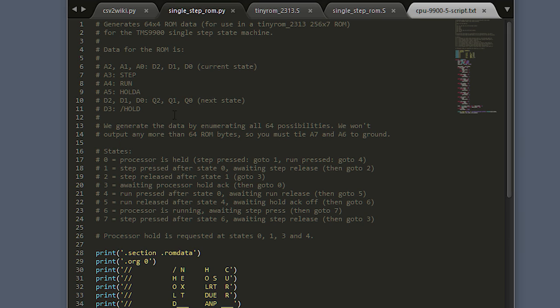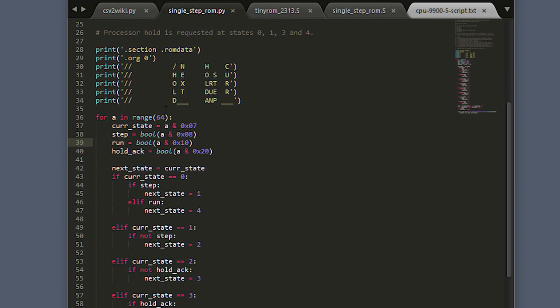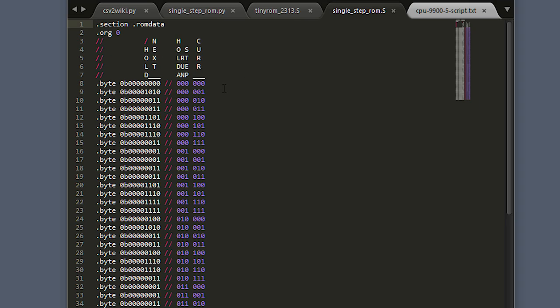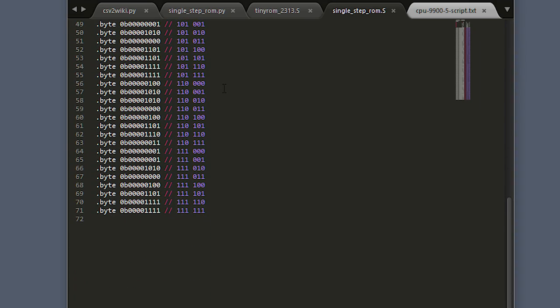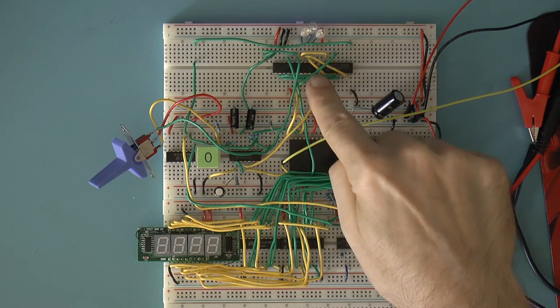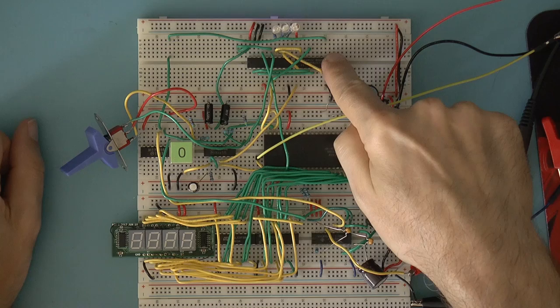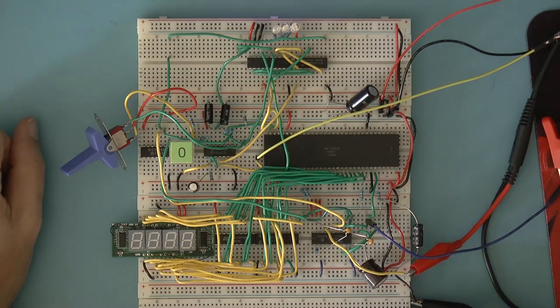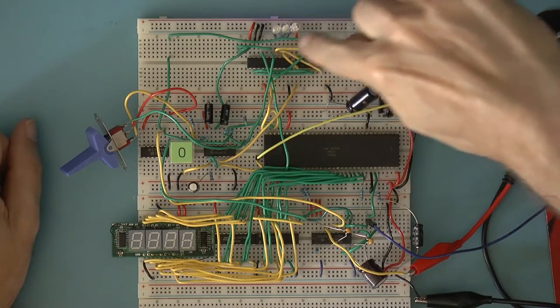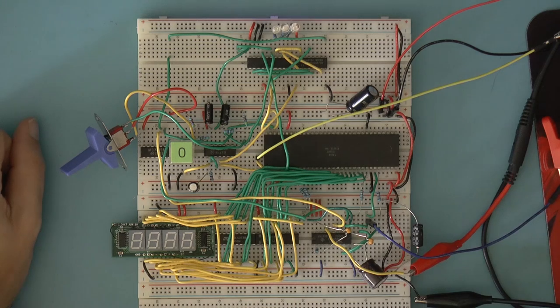The state machine only needs a 64 by 4 ROM. I wrote a Python program to generate the ROM, compiled the whole thing, programmed the chip, and put it on the breadboard. As before, it uses a 74175 quad flip-flop to store the current state.